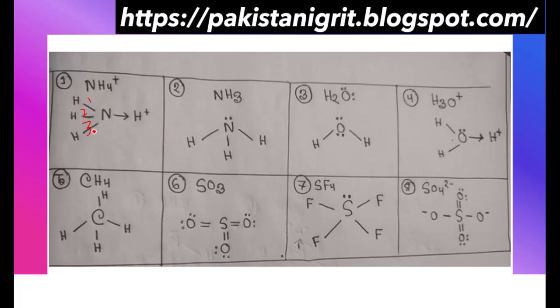In the case of nitrogen forming three sigma bonds, the hybridization will be sp3. We know oxygen is forming three sigma bonds in this case, and one bond is the donation of a lone pair from nitrogen to hydrogen. In ammonia, there are three sigma bonds and hybridization will be sp3.